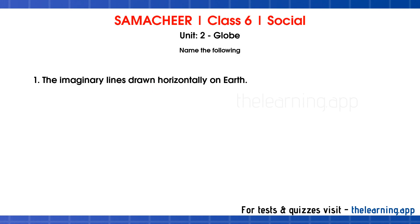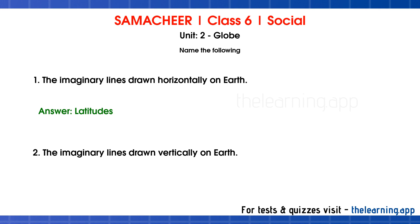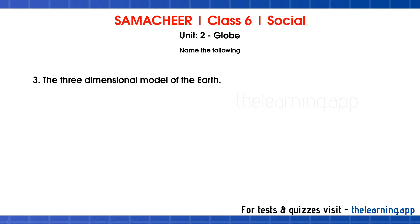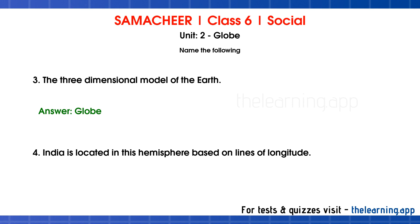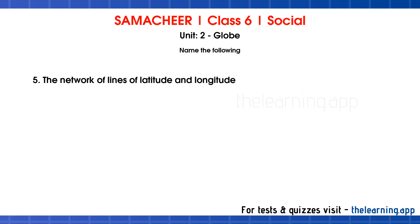Name the following. Question 1: The imaginary lines drawn horizontally on Earth — Correct answer is Latitudes. Question 2: The imaginary lines drawn vertically on Earth — Correct answer is Longitudes. Question 3: The three-dimensional model of the Earth — Correct answer is Globe. Question 4: India is located in this hemisphere based on lines of longitude — Correct answer is Eastern Hemisphere. Question 5: The network of lines of latitude and longitude — Correct answer is Earth Grid.